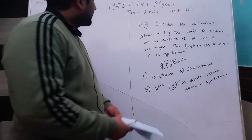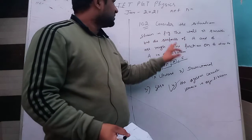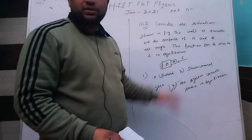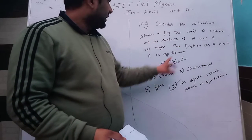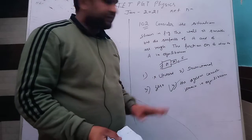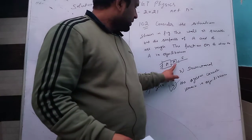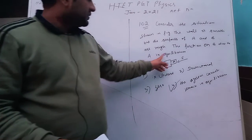Hello students, the next question is: consider the situation shown in the figure. The wall is smooth, and blocks A and B are rough, with friction on B due to A.